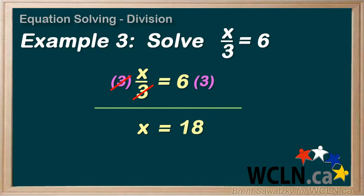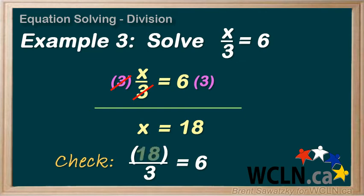So we're done. But is this correct? We can find out. We write the original equation with a set of brackets in the place of the x. Now let's put our 18 in the brackets. So 18 divided by 3 equals 6. And we think back to our times tables and sure enough, that's true. So the answer for this question is definitely 18.